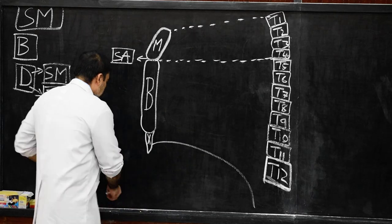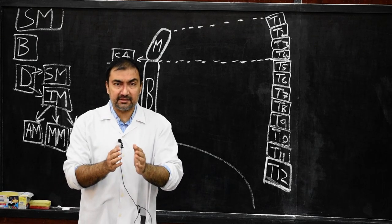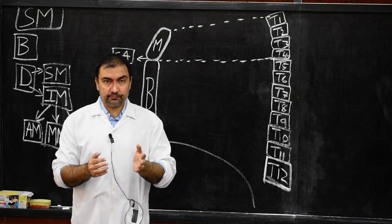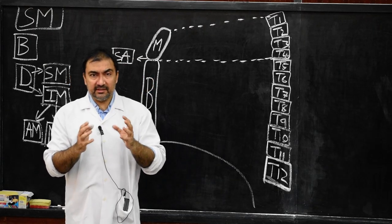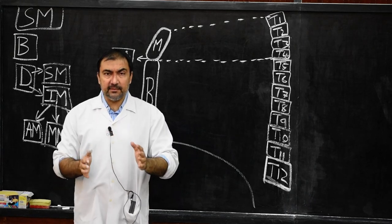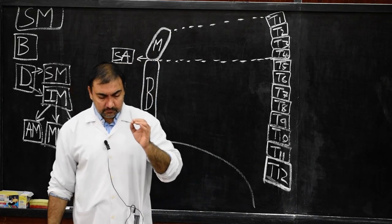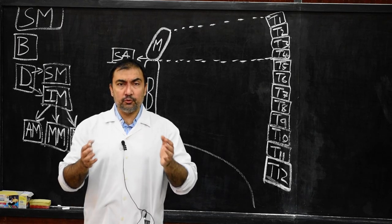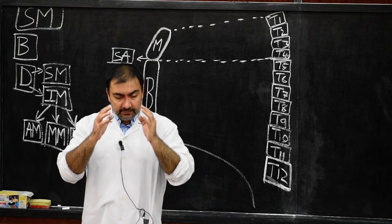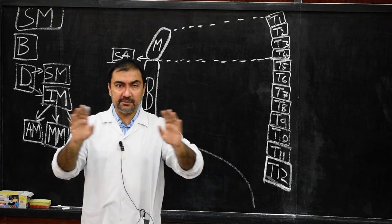In the boundaries of mediastinum — definition: mediastinum is a space which is present between the two pleural sacs, right pleural sac and the left pleural sac. In between these two pleural sacs, there is a space called mediastinum, and this mediastinum is bounded on either side by mediastinal pleura.